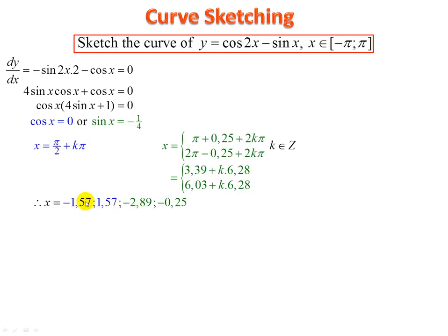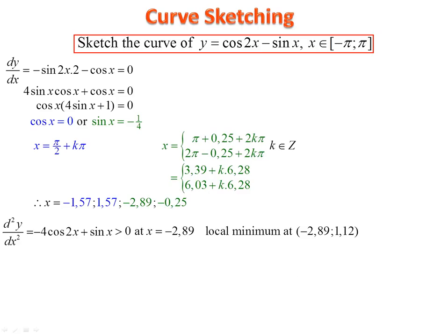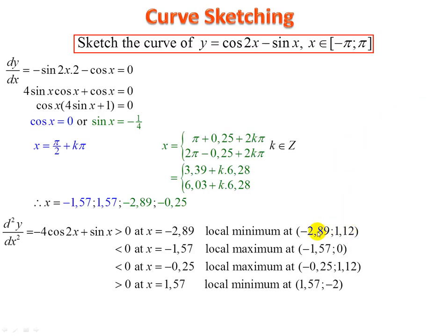Now I have the x-values of the stationary points. Differentiate again to get the second derivative: negative 2 sin 2x differentiates — sine 2x becomes cos 2x times 2, giving negative 4 cos 2x; and minus cos x becomes plus sin x. Substitute each x-value into the second derivative to determine whether each stationary point is a local maximum or minimum. Substitute each x-value into the original equation to get the corresponding y-values.